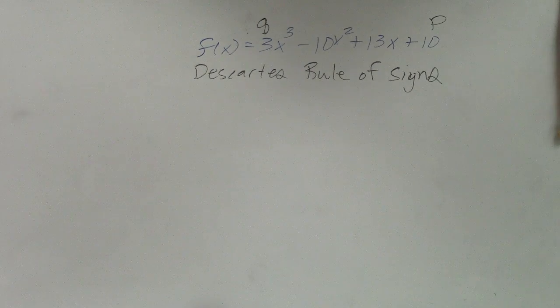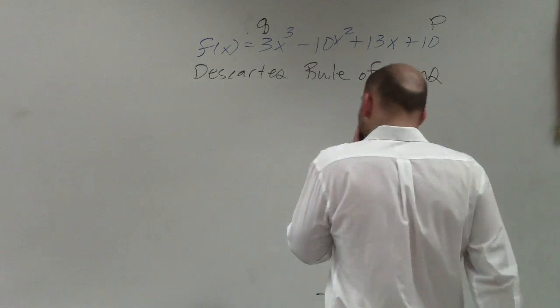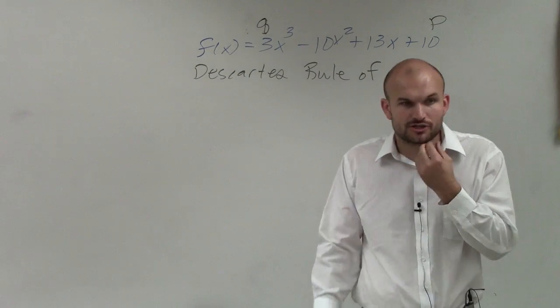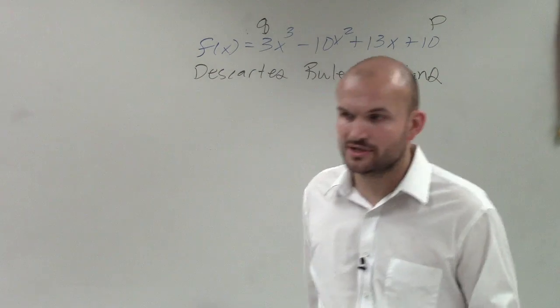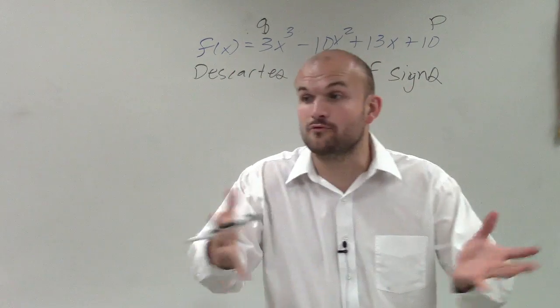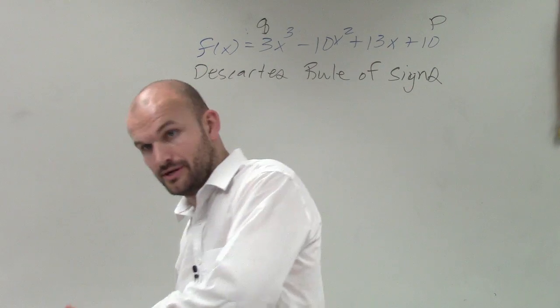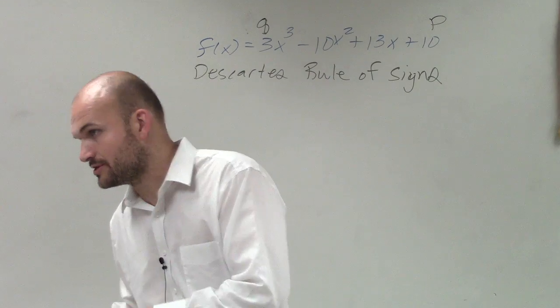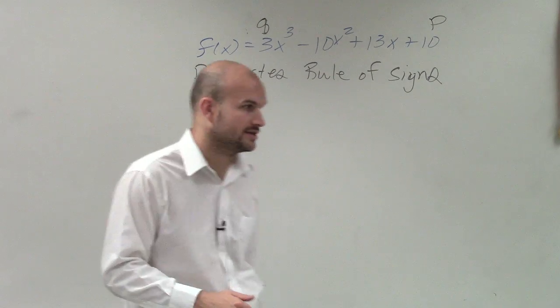Descartes came up with the rule of signs where he was able to determine the real zeros rather than dealing with rational zeros. We have real and we have imaginary - those are the only two that we're dealing with.